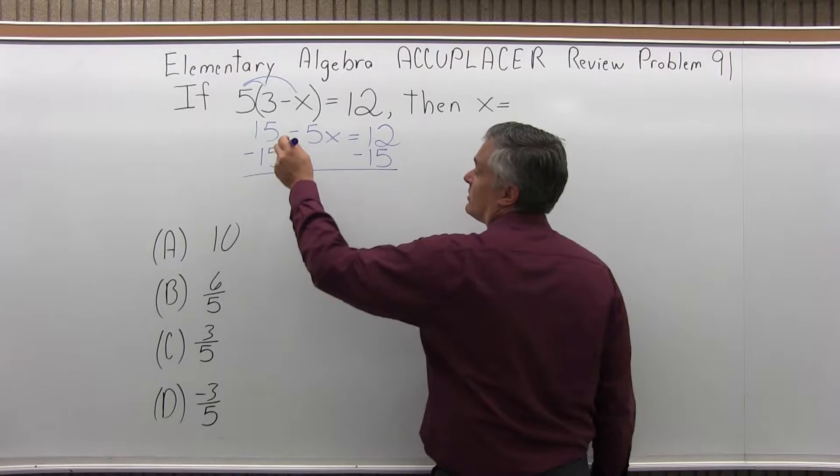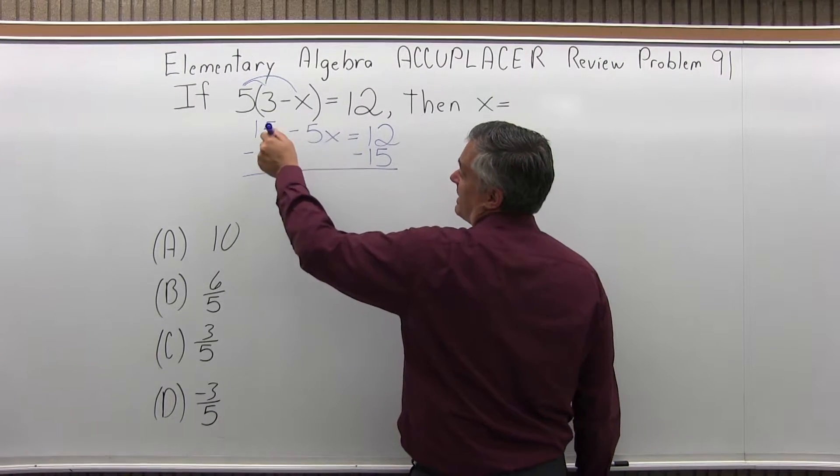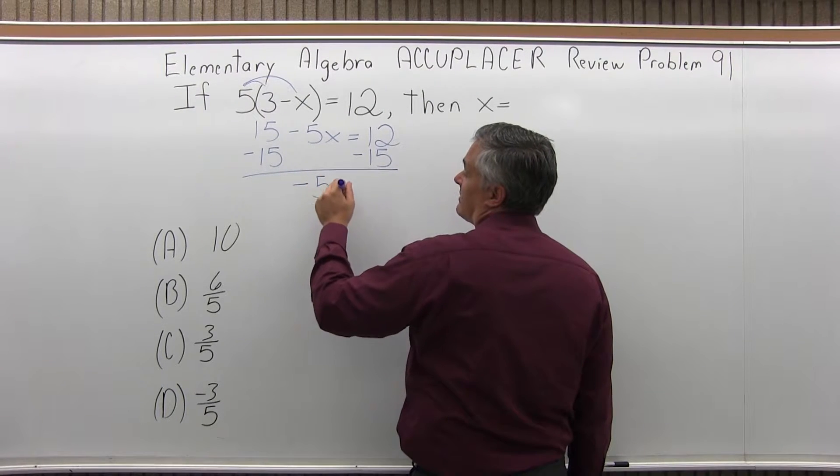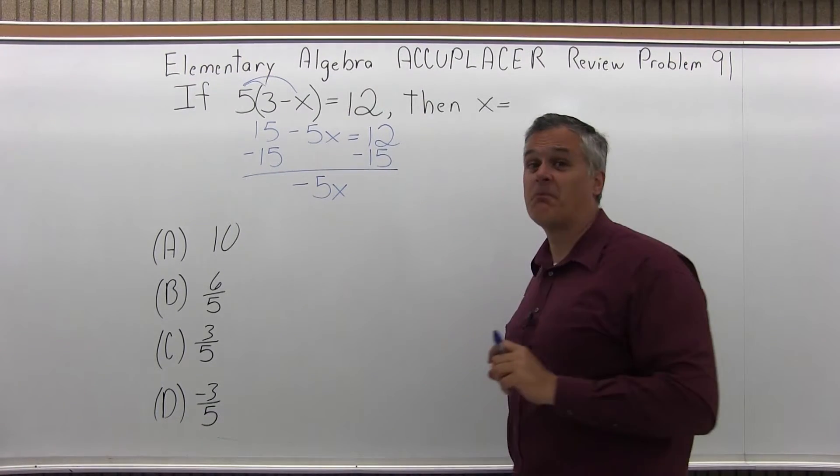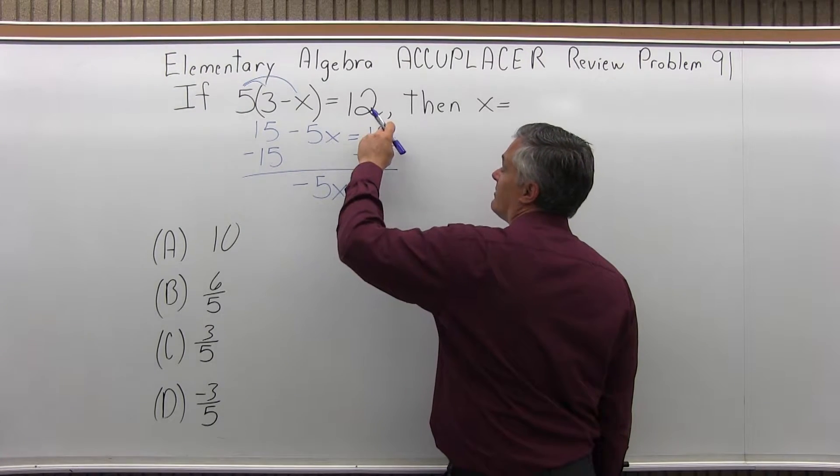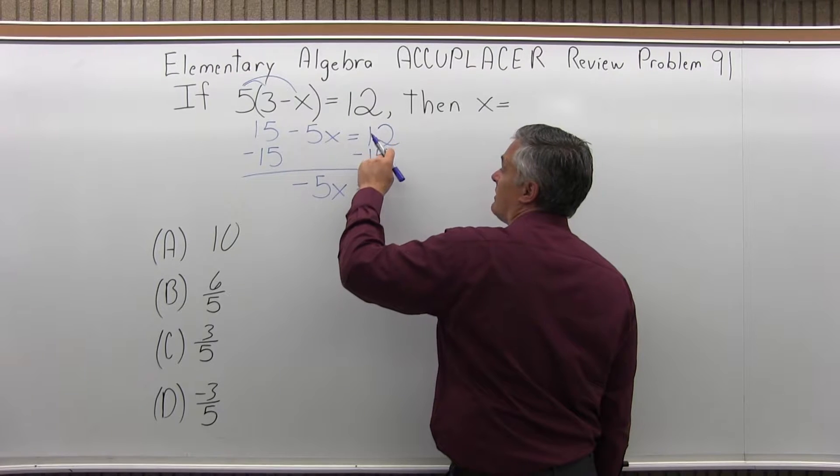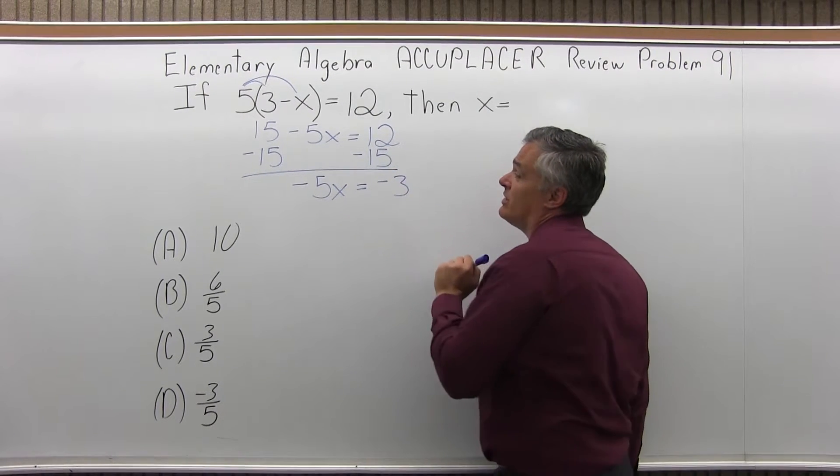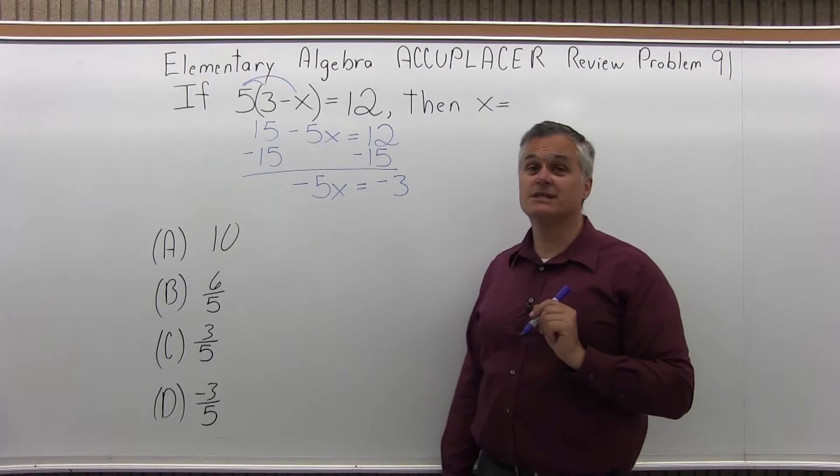So now, the left side of the equation, 15 minus 5x minus 15. The 15 and the minus 15 cancel. Still have the minus 5x. Pay attention to the sign. It's not 5x. It's minus 5x. That'll make a big difference. And on the right side, pay attention to the sign. Positive 12, negative 15, when I put those together, that's minus 3. 12 minus 15 is negative 3.